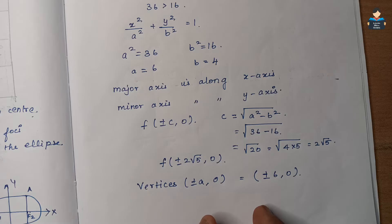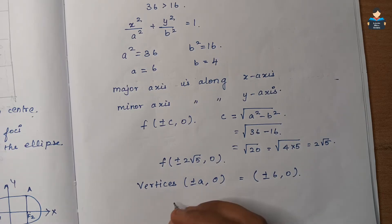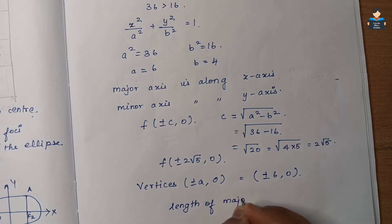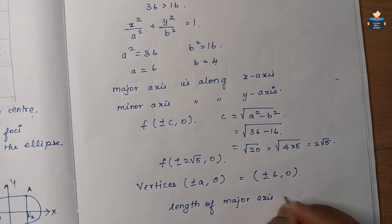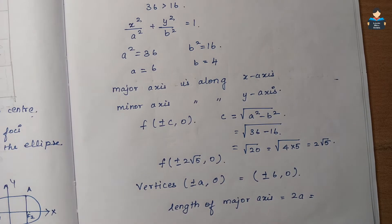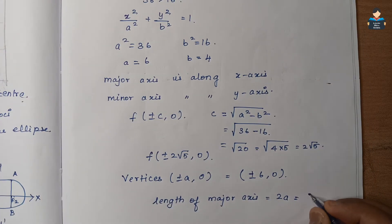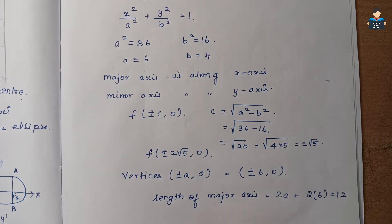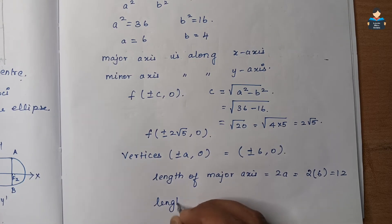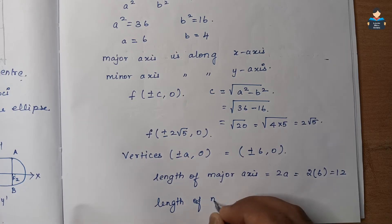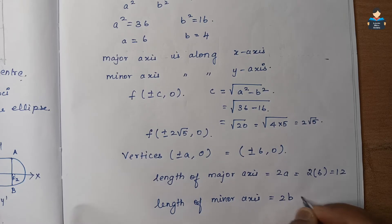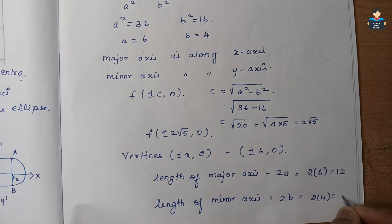The length of the major axis is 2a = 2 × 6 = 12, and the length of the minor axis is 2b = 2 × 4 = 8.